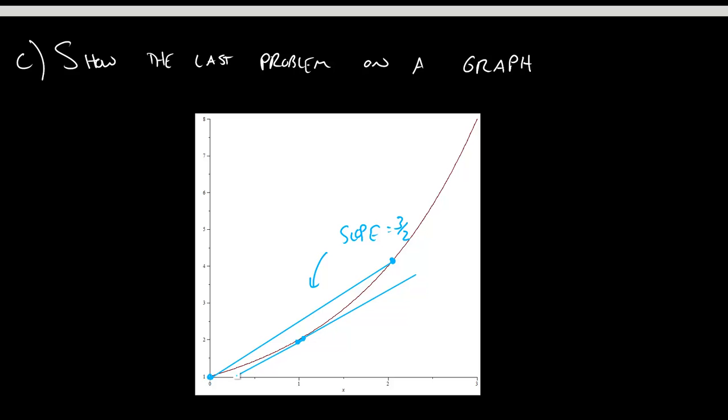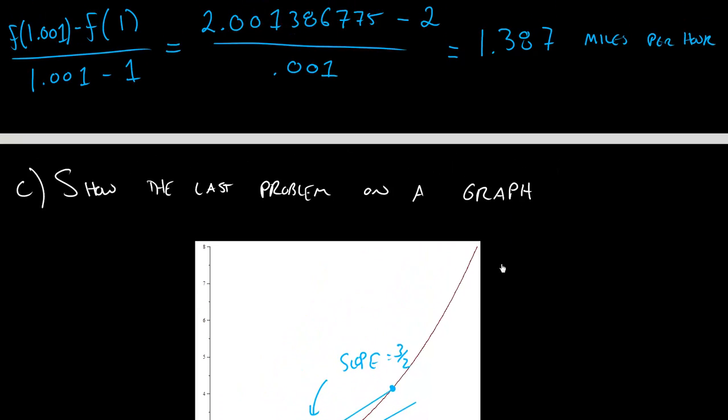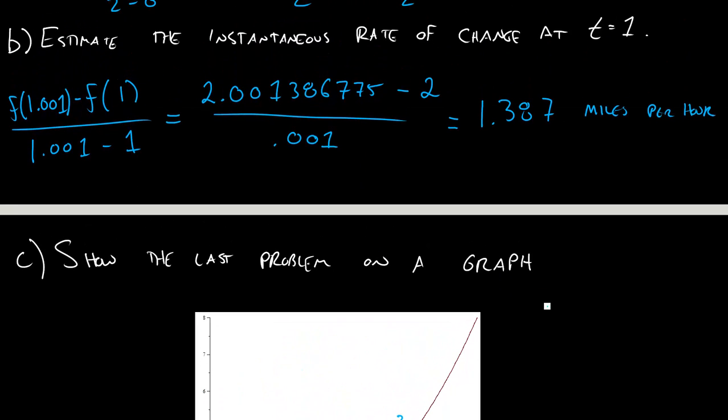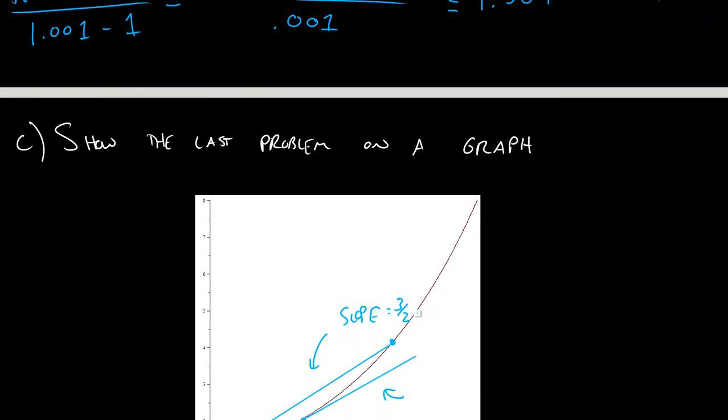So it's this line that we end up calling the tangent line. It's a line that will always touch our graph at that point we want it to, at the point 1.001, but it doesn't really cross our graph. It just kind of bounces off of it. And the slope of this tangent line is the instantaneous rate of change that I calculated here. So it's 1.387. So this has a slope of 1.387.